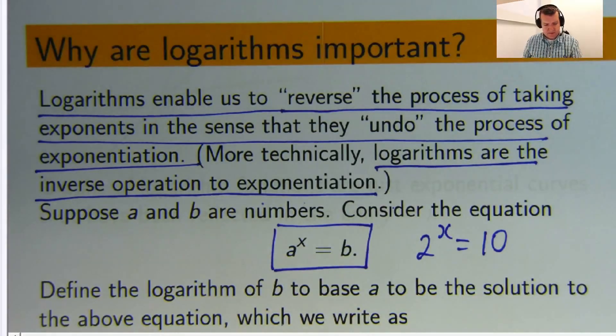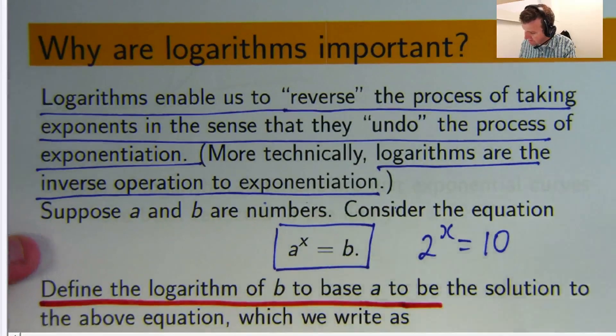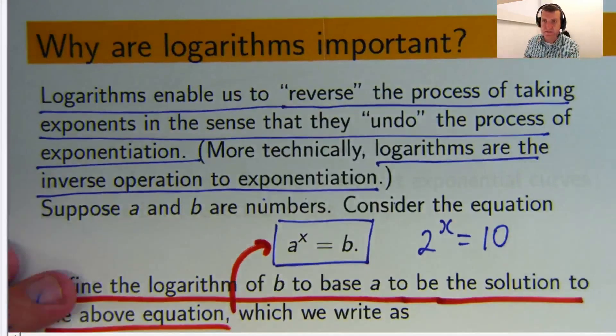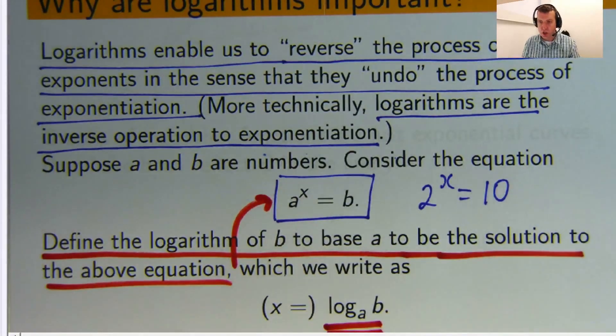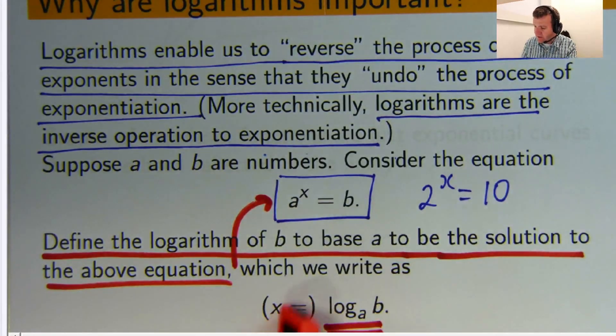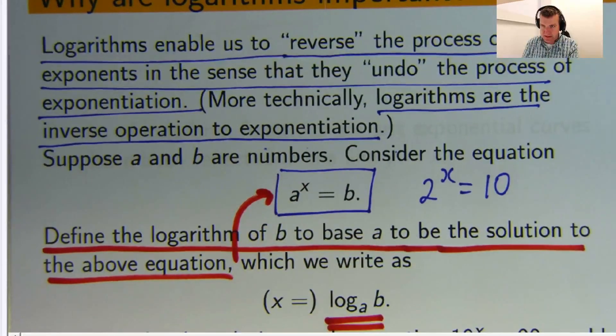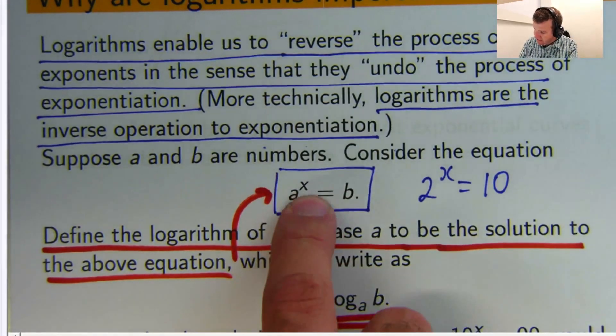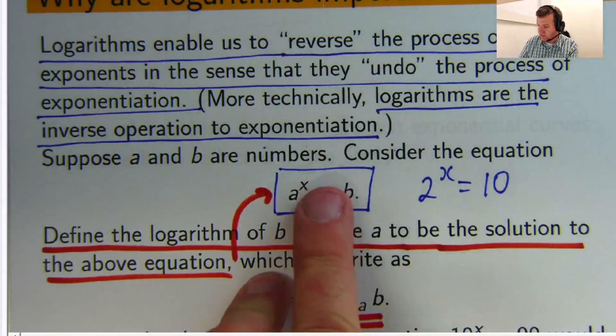What we do is we define the logarithm of b to base a to be the solution to this equation. And we write it in this log b to base a type notation. I've just put the x in here to say, well, this is what the value of x is that solves this equation up here. So, the base goes in there. The b goes over there. And the exponent goes here. But generally, you'll just say that's the solution to this problem.